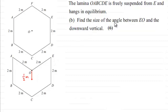And we've now got to find the size of the angle between EO and the downward vertical, for six marks. So if you'd like to have a go at this, I'll just give you a moment to pause the video, and when you come back, you can compare your work solution to mine. OK, welcome back then, if you had a go.